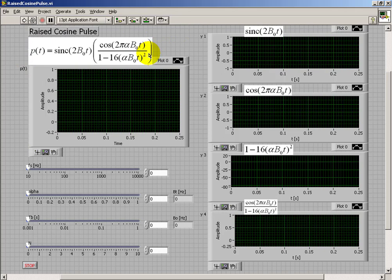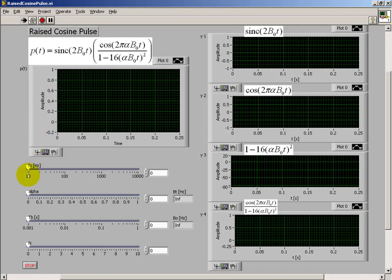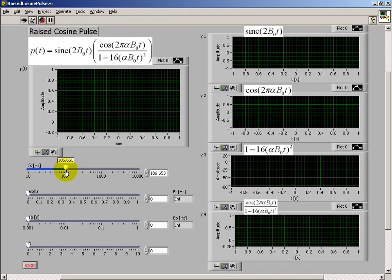The entire expression for our pulse p(t) is right here. It consists of a sinc function. In the numerator, we have a cosine function, which I'm plotting separately. In the denominator, we have something that's essentially minus t squared. We have the ratio of those two plotted in the bottom window.